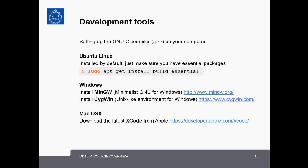Here are instructions for setting up the GNU C compiler (GCC) on your computer. If you have Ubuntu Linux, it is installed by default — just ensure you have essential packages by typing: sudo apt-get install build-essential. If you have a Windows machine, you can install MinGW (the Minimalist GNU for Windows) or Cygwin, a Unix-like environment for Windows. If you have Mac OS X, you can download the latest Xcode from Apple.